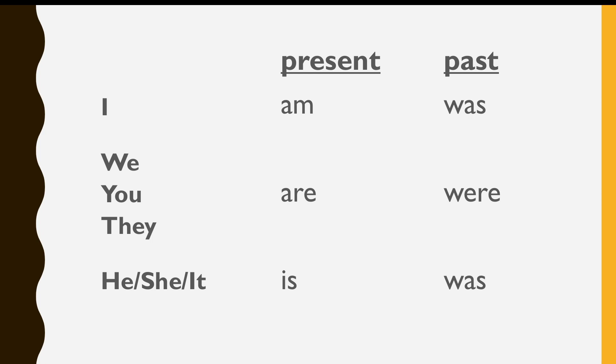In the past simple, we say I was, we were, you were, they were, he, she, it was.